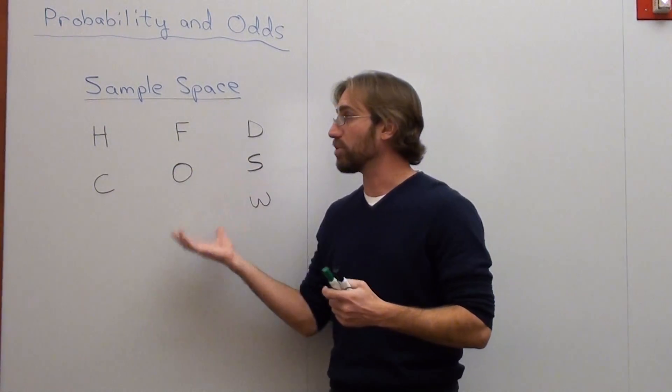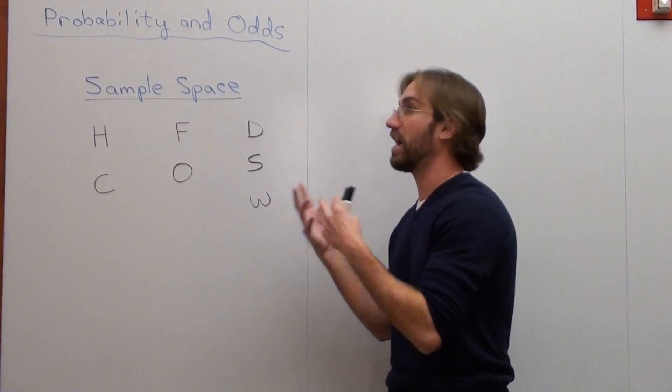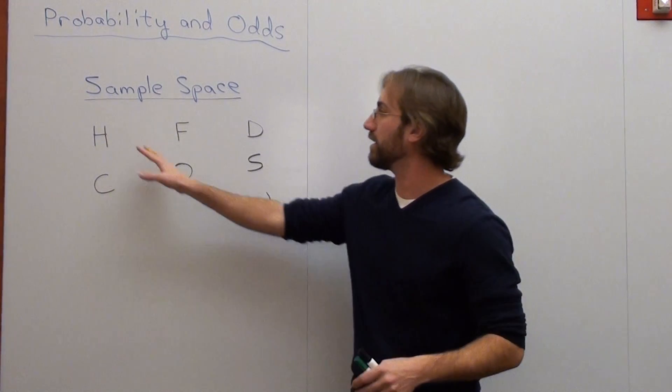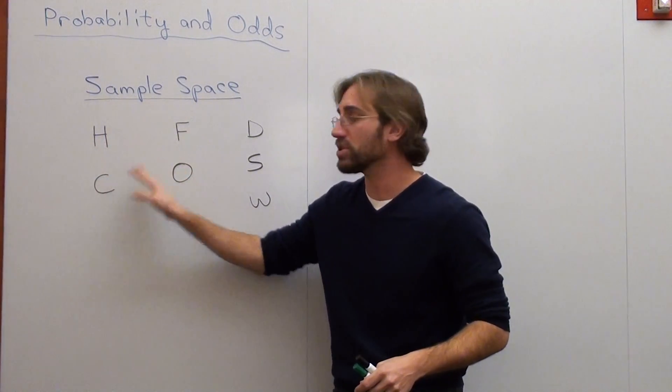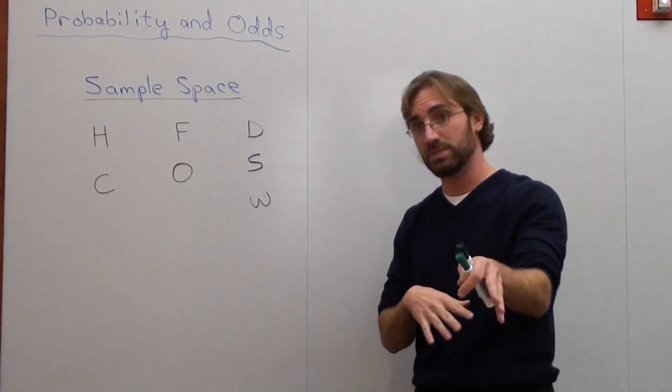So I'm going to use this sample space right here to decide how many different options I have of ordering something. And I wrote two options here, two options here, and three options here. Let me explain what those are.